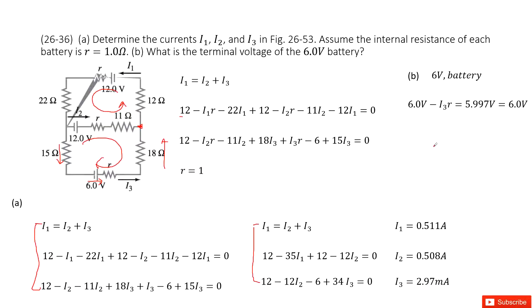Now, we need to find the terminal voltage for the 6V battery. So we look at this box. This is a battery with internal resistance. R is 1 ohm. The current going through is I3.